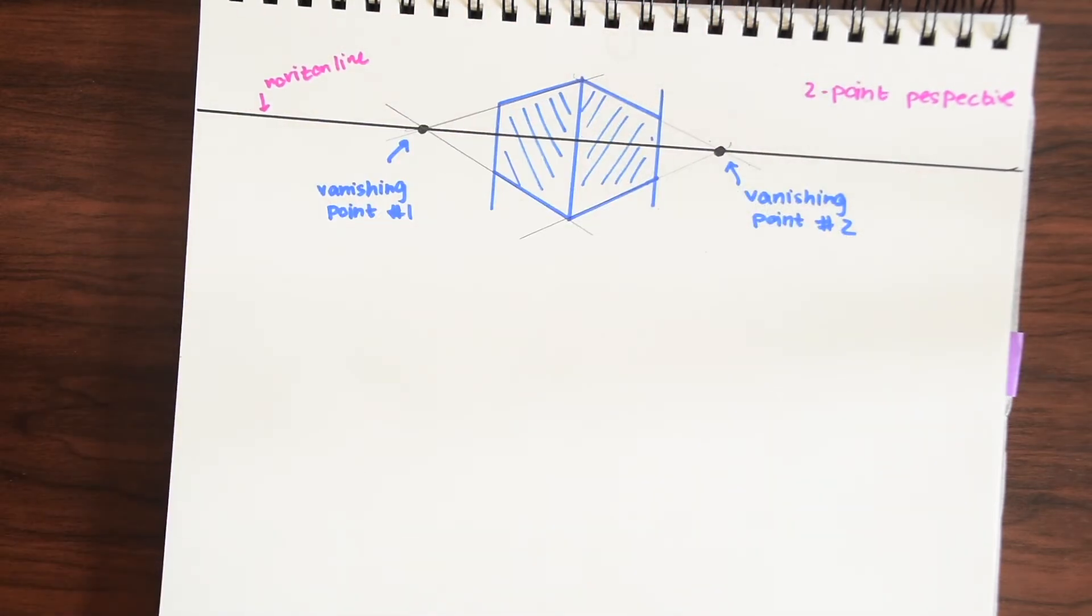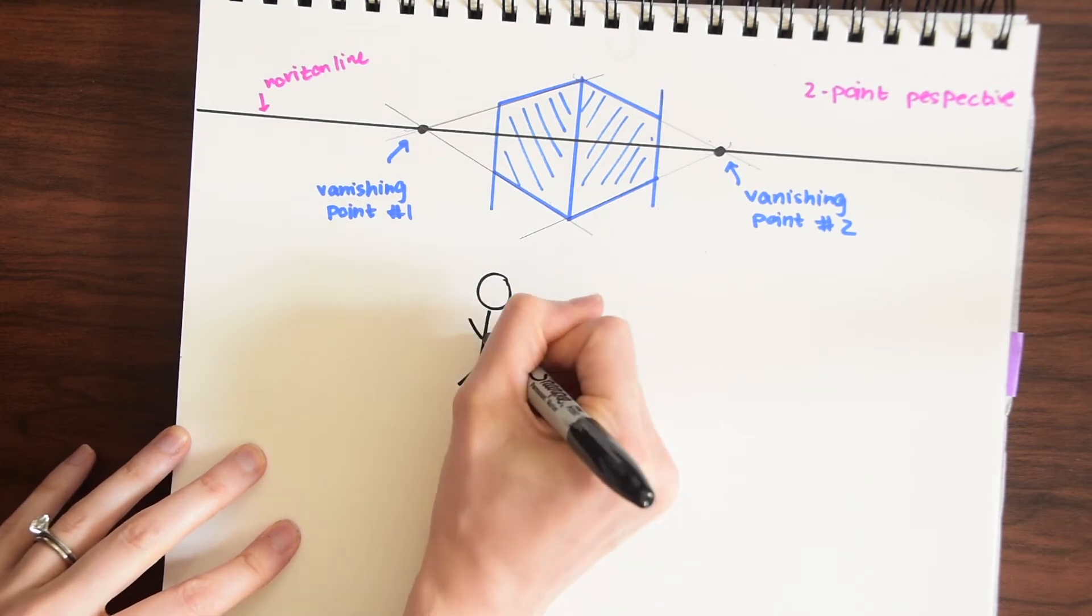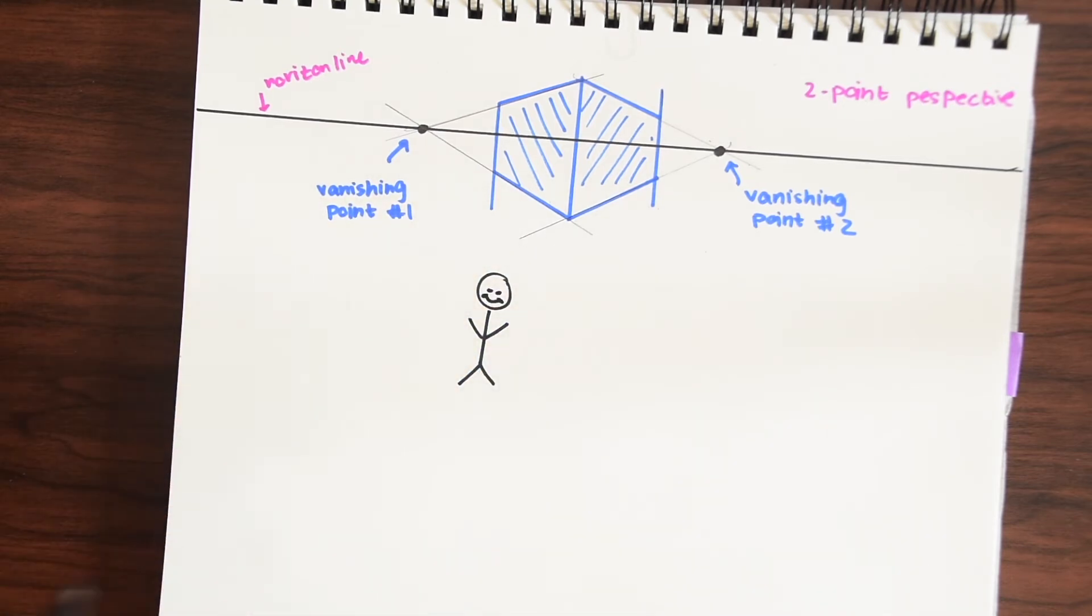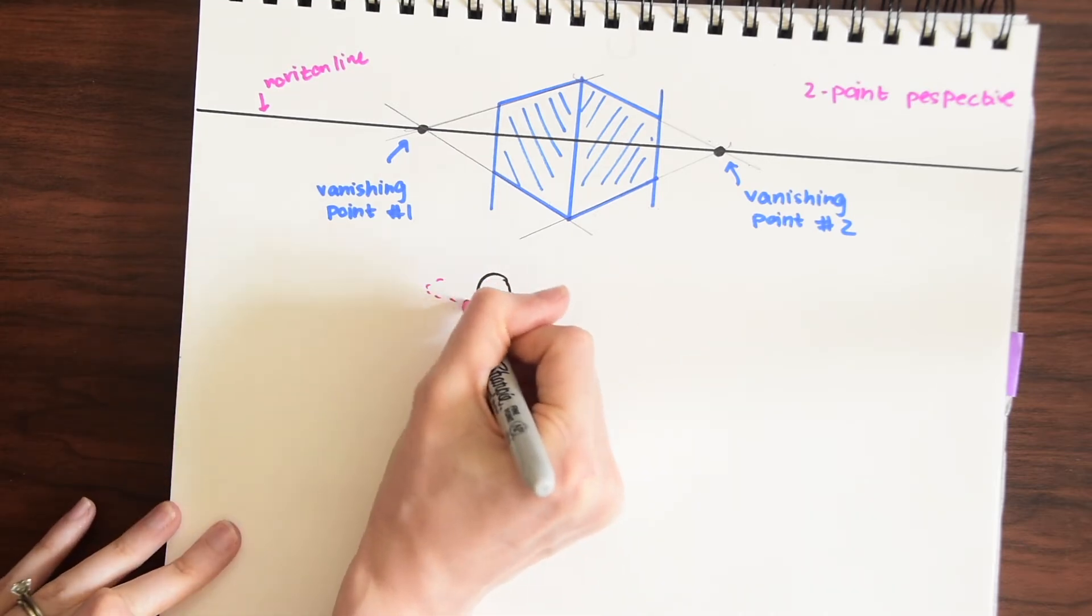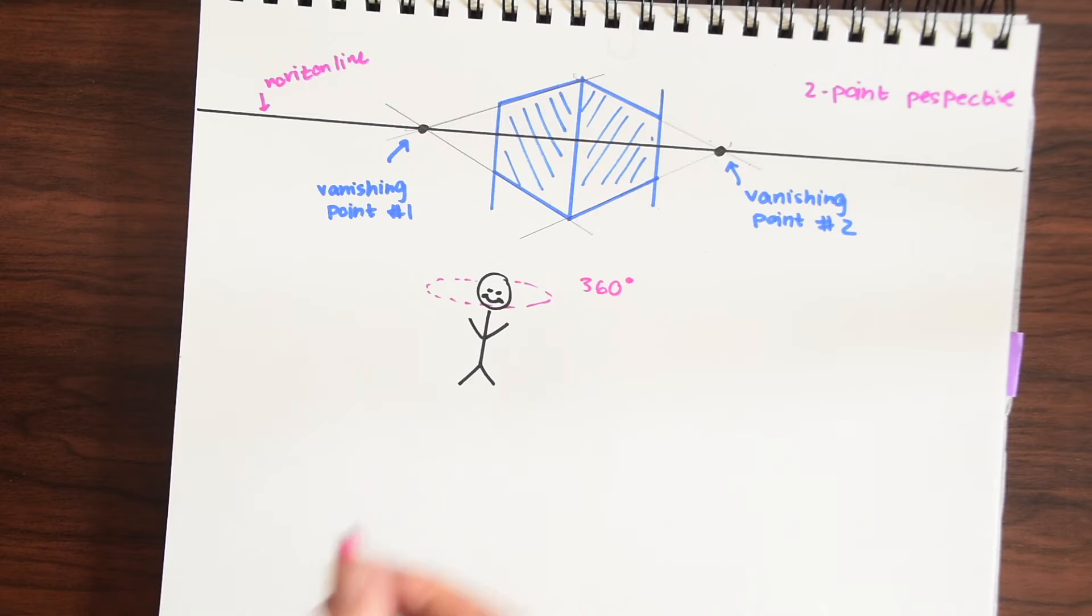So if you're wondering how we can even have two vanishing points if you think about us as a human as people so let me draw a little stick figure. So his view or her view of the world if you think about it is a potential 360 degree view right. If this person turned all the way around they would have potentially 360 degree view of their world.